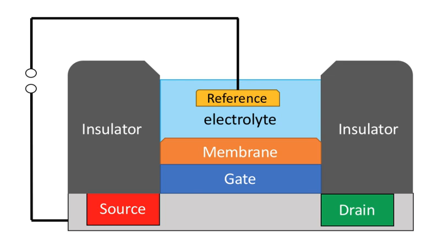A CHEMFET is a chemically sensitive field-effect transistor, that is a field-effect transistor used as a sensor for measuring chemical concentrations in solution. When the target analyte concentration changes, the current through the transistor will change accordingly.